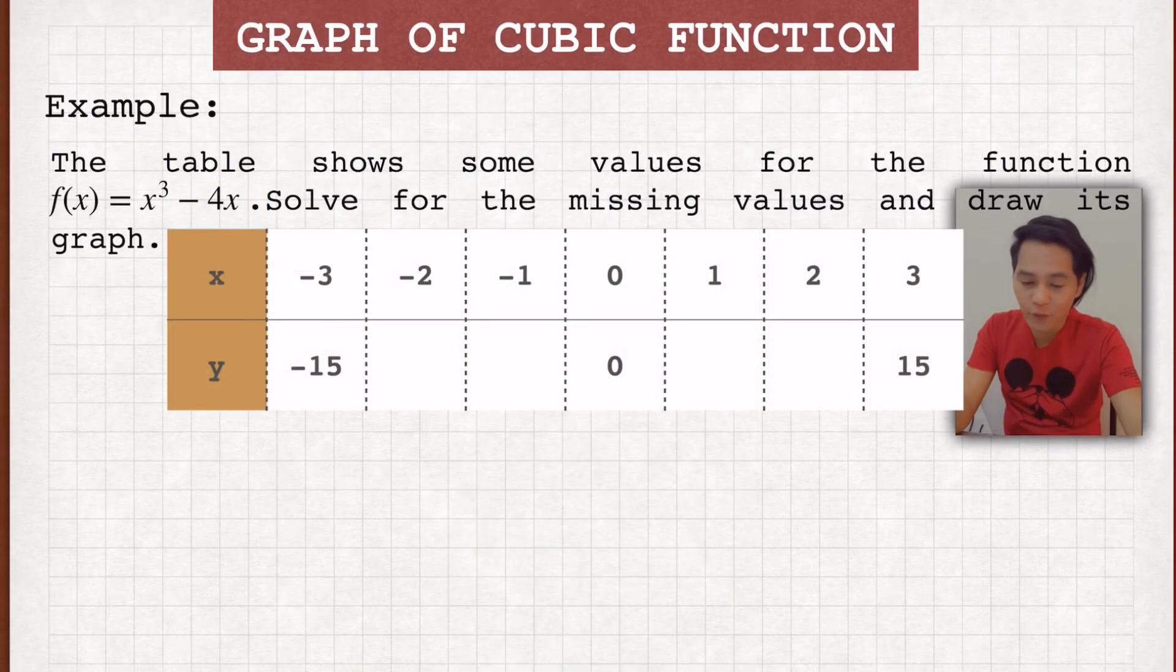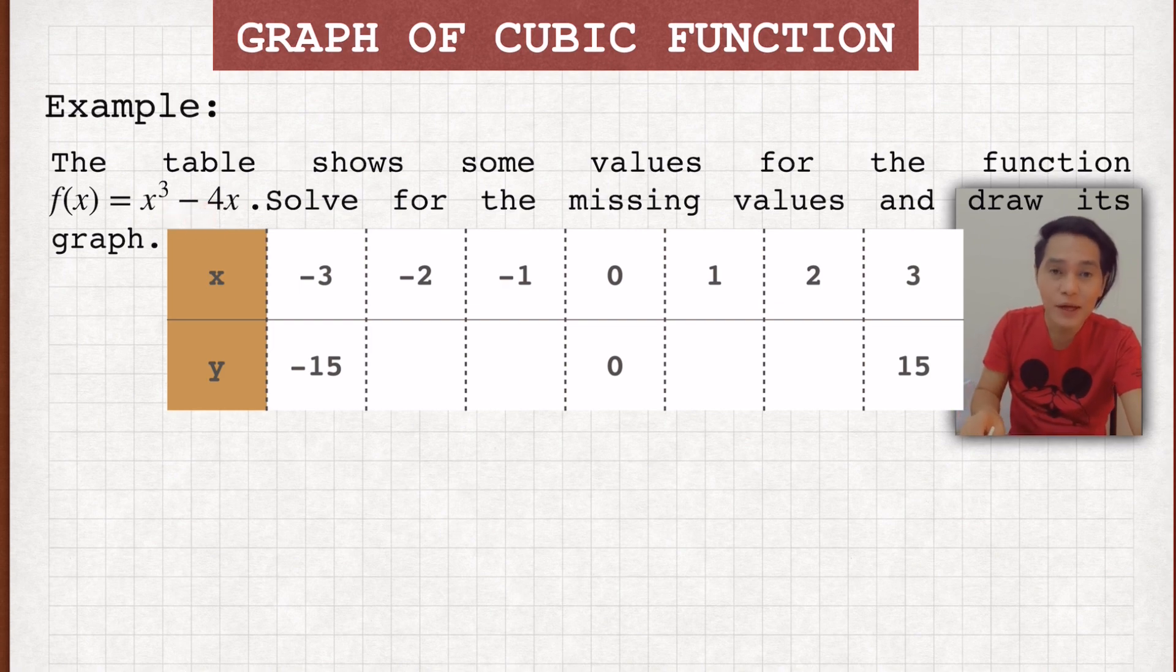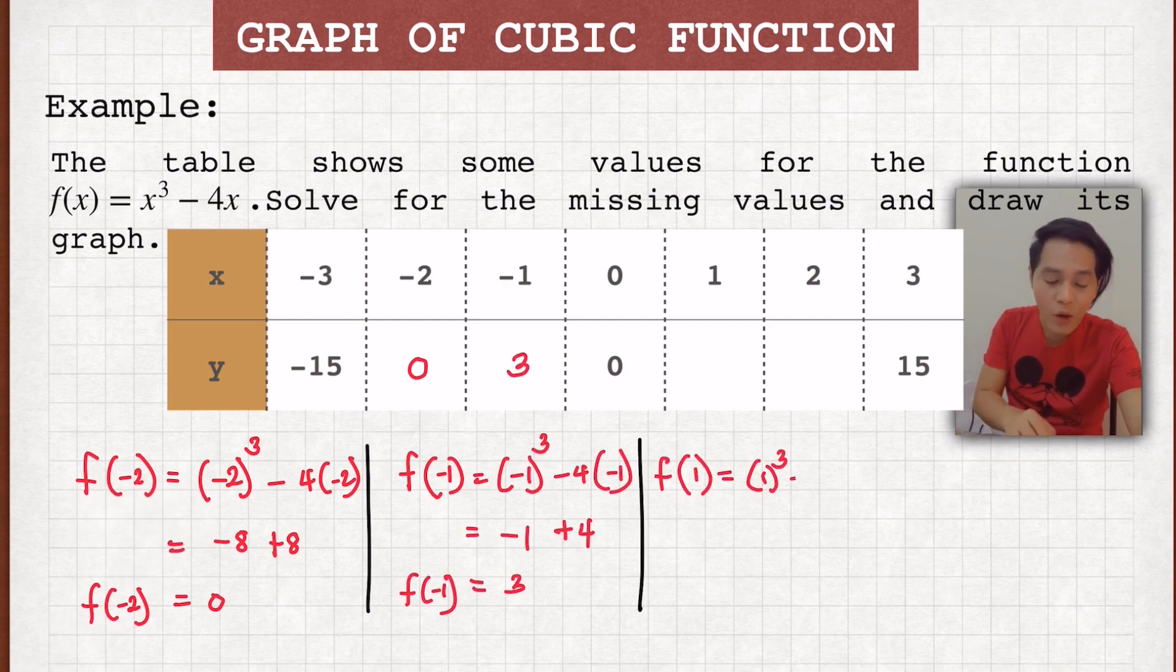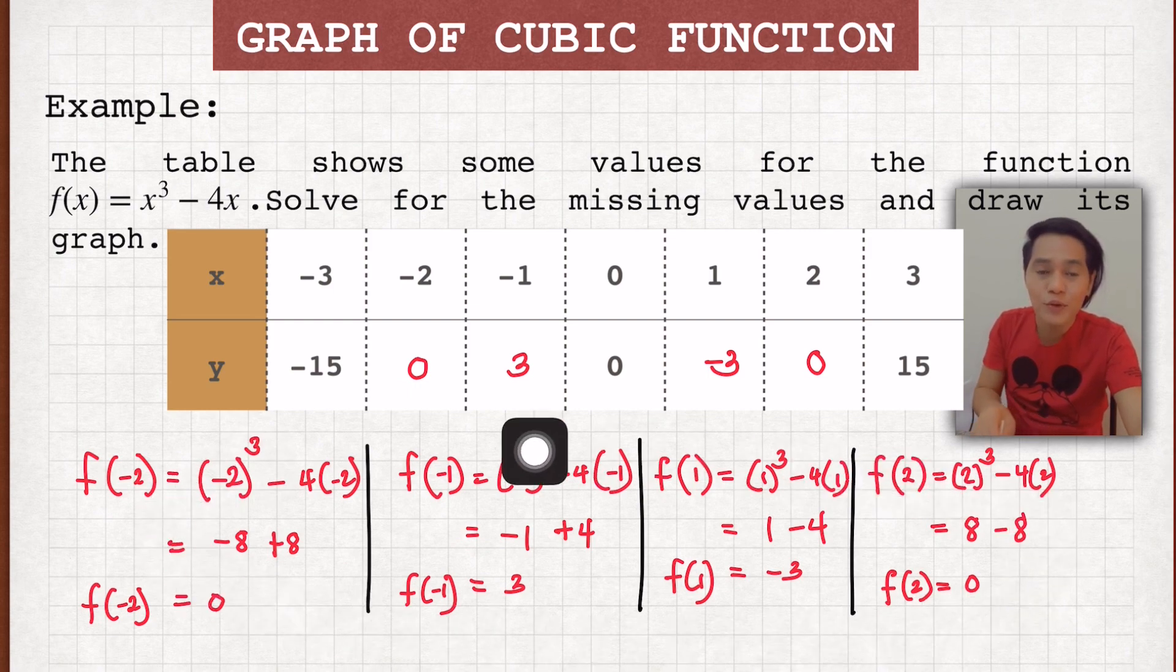For us to solve for the missing values, just simply substitute the value of x which is given in the table to the given function f(x) = x³ - 4x. So here we go. Just look at the procedure. Now I'm substituting the values of -2 wherein the value of y is equal to 0, and then -1 which is equal to 3, and then 1 which is equal to -3, and 2 is equal to 0. So there you go guys. That's how you find out the missing values.